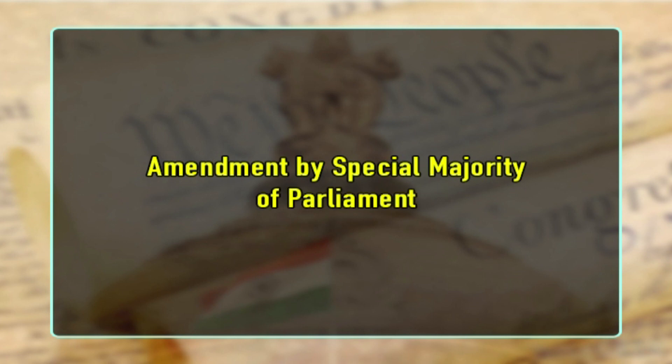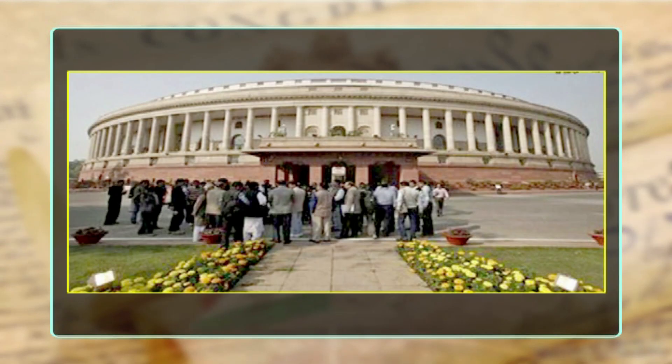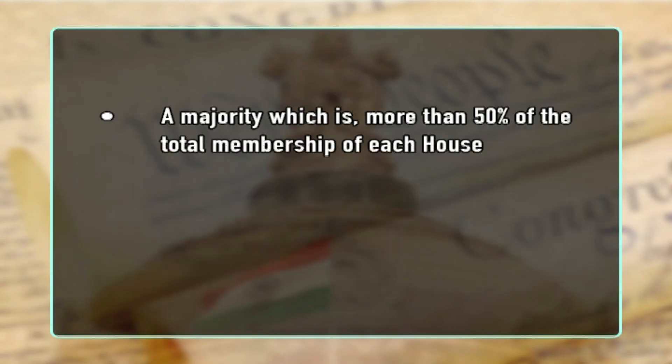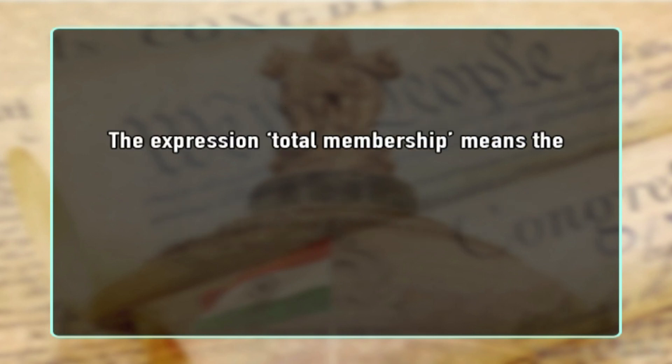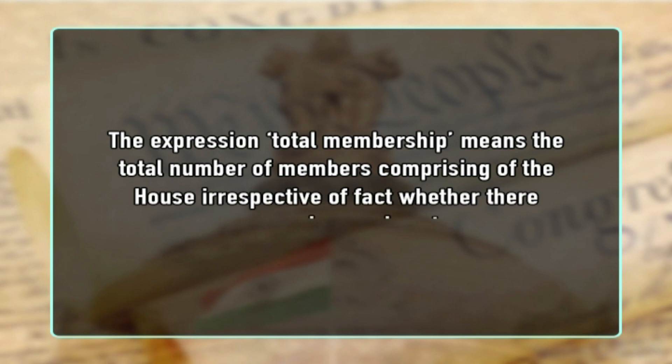Amendment by special majority of parliament: The majority of the provisions in the constitution need to be amended by a special majority of the parliament — that is, a majority of more than 50% of the total membership of each house and a majority of two-thirds of the members of each house present and voting. The expression 'total membership' means the total number of members comprising the house, irrespective of whether there are vacancies or absentees. Strictly speaking, the special majority is required only for voting at the third reading stage of the bill, but by way of abundant caution, the requirement for special majority has been provided for in the rules of the houses in respect of all effective stages of the bill.